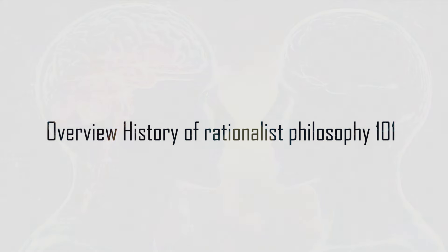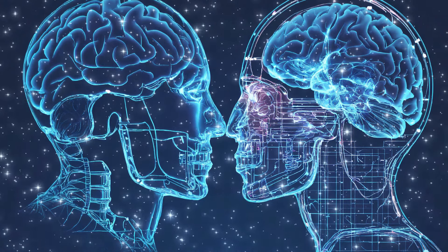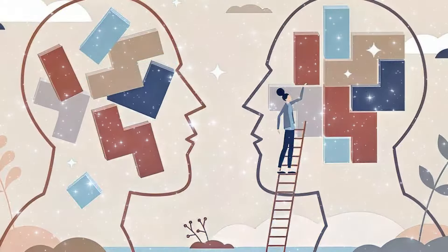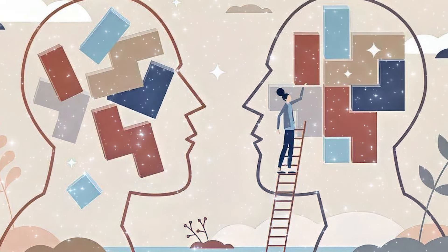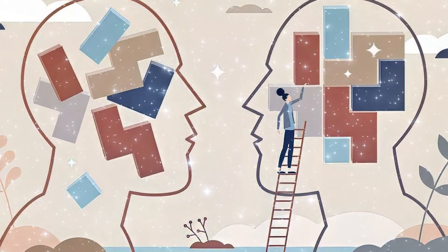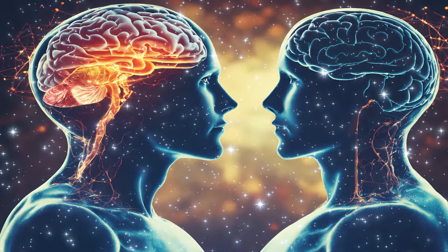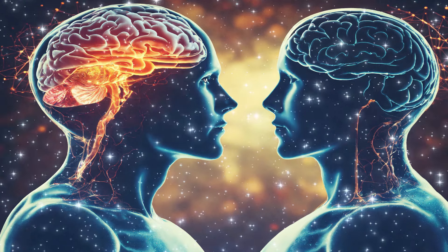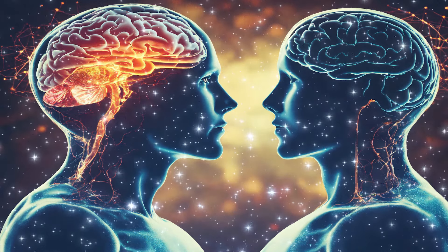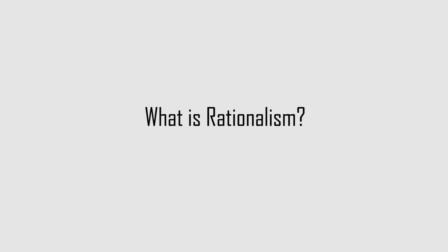Rationalism 101: a historical overview. What is rationalism? In the field of epistemology there are many positions and movements about how we acquire knowledge, each proposing something about the ultimate source, criteria, and limits of our knowledge. Out of all of them, rationalism — the view that reason is the primary basis of knowledge — seems to be the most popular and oldest epistemological position, perhaps as old as philosophy itself.